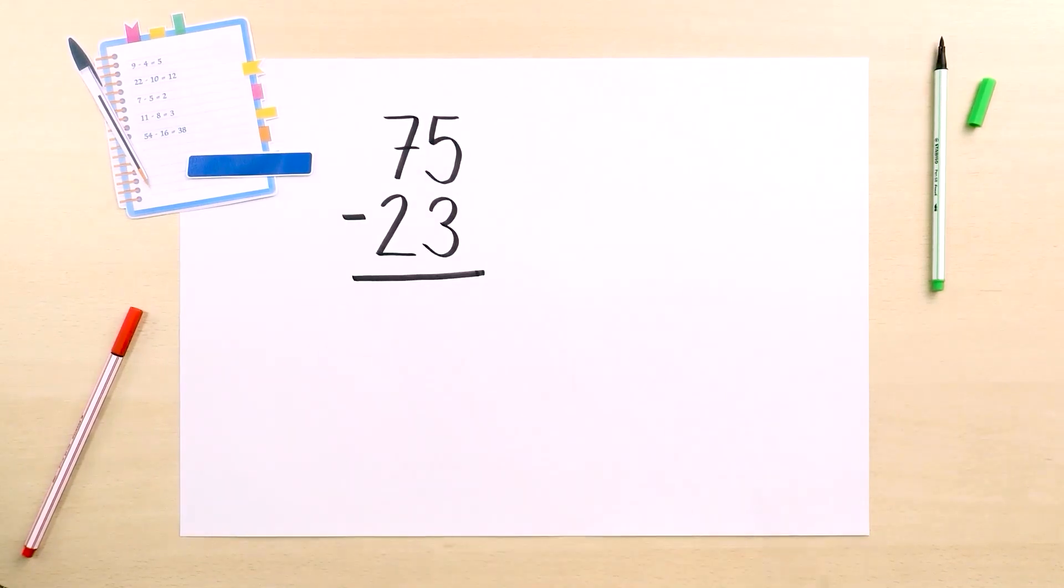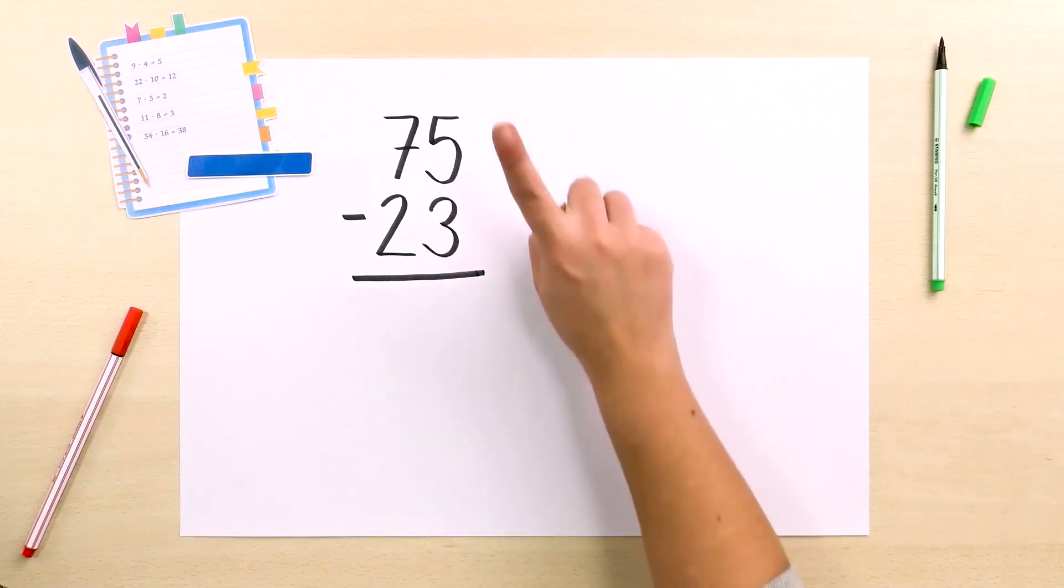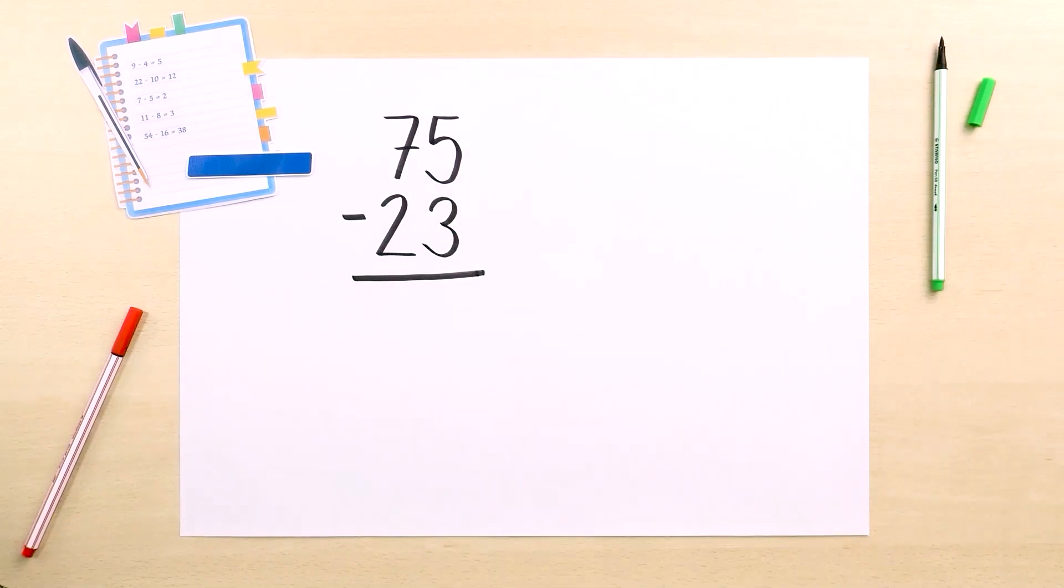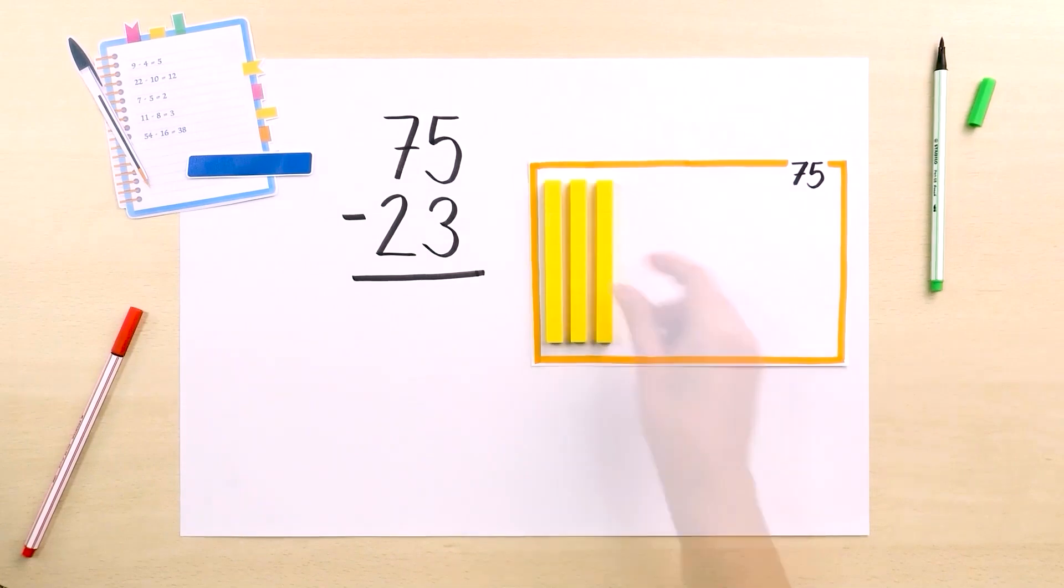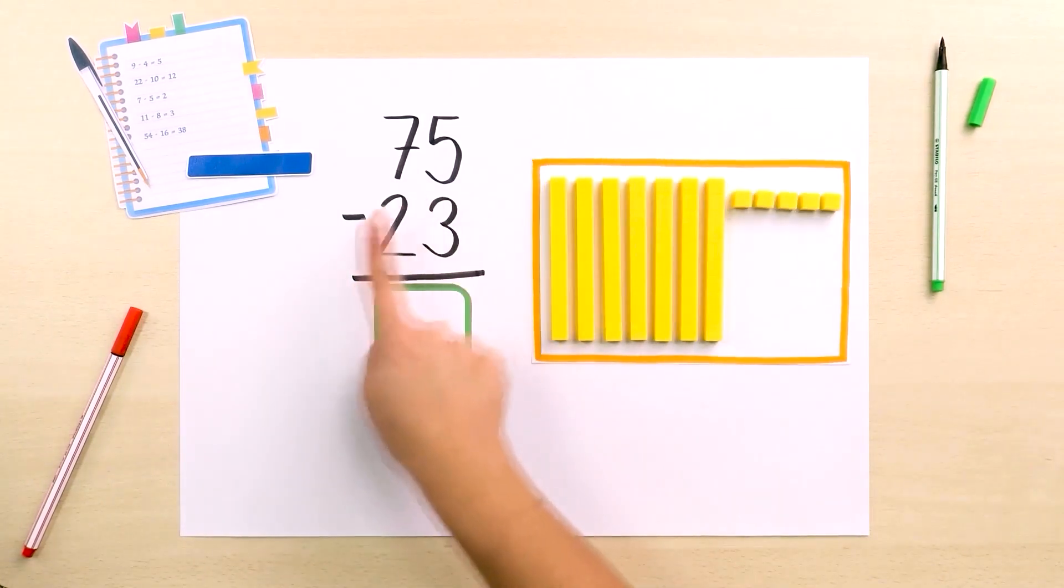Unlike the additions, we only represent the biggest number for subtractions, in this case 75, 7 bars and 5 units, from which we have to take away 23 cubes.